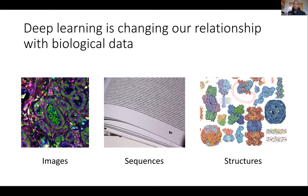I'd like to start with a 30,000-foot view of how I like to see the intersection of the life sciences and machine learning. Roughly speaking, you can view biological data as coming in three flavors. There's imaging data, which captures both the spatial and temporal variation of living matter. There's sequence data, which really captures the parts-list variation of living matter. And then there's structural data, which really tells us how biological molecules physically interact with the physical world.